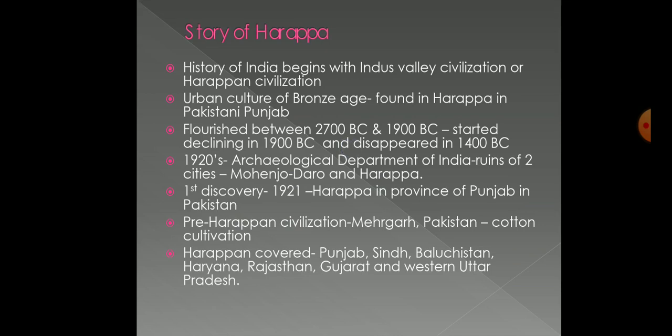Various excavations took place from the 1920s to 1940. In 1856, a British engineer excavated a Harappan seal showing a bull and six written letters. The first official discovery took place in 1921 in the Harappan province of Punjab in Pakistan, done by an Indian archaeologist named Dayaram Sahni. The pre-Harappan civilization found in Mehergarh in Pakistan shows evidence of cotton cultivation, indicating that cotton was first cultivated by people during the Indus Valley Civilization.